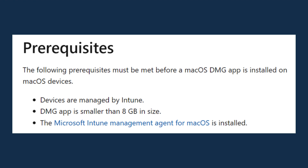Now let's talk about prerequisites. Before we dive in, ensure that the following prerequisites are met for a smoother DMG application installation on macOS. The very first one is that the macOS device must be managed by Intune. The DMG application size should not exceed 8GB, and the Microsoft Intune management extension for macOS must be installed on the target devices.